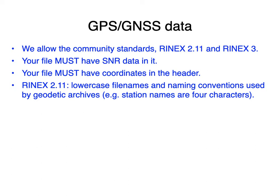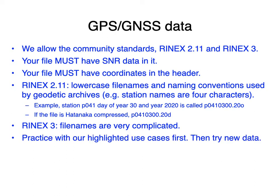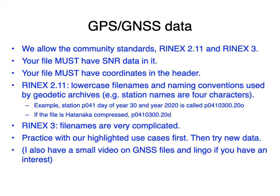RINEX 2.11 has very simple station names: lowercase four-character station names, day of year is a three-character field, and the year goes at the end with an O for observation. If the files are Hatanaka compressed, the O is replaced with a small d. RINEX 3 file names are really complicated. I would suggest practicing with our highlighted use cases first, then try new data or data you've collected. I also have a small video on files and other types of GNSS lingo.